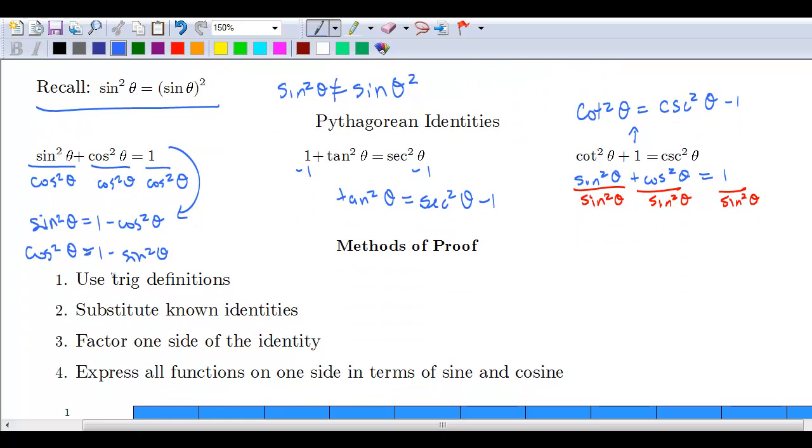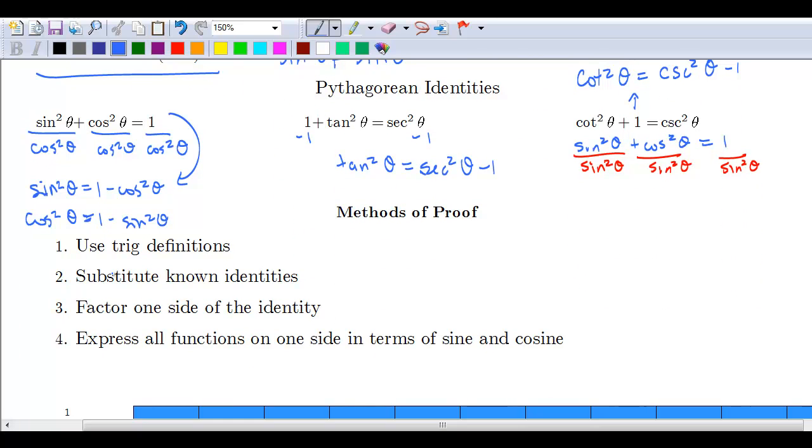The last thing we want to talk about in this video are the methods of proof. In the next video we'll actually go through and do some examples, but there's a lot of examples for this section because I want to make sure you feel comfortable. I'm going to break it down into the intro and then the actual execution of using identities to prove trig identities.